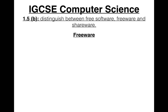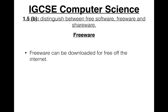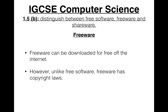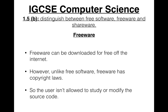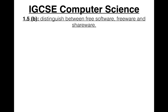Freeware is a little bit different. Freeware can be downloaded for free off the internet, but unlike free software, freeware has copyright laws. So the user isn't allowed to study or modify the source code — they're just allowed to get it for free.